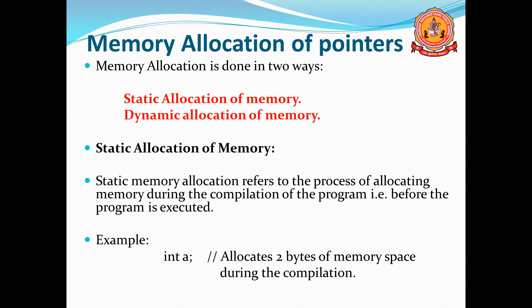First we will move to static allocation of memory. Static allocation refers to the process of allocating the memory during the compilation of the program, that is before the program is executed. It means reserving the space for variables when the program is compiled. Allocating memory or reserving memory space to a particular variable is done at the time of compilation, before executing the program. That is known as static memory allocation.